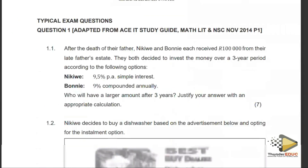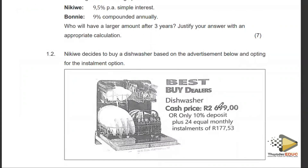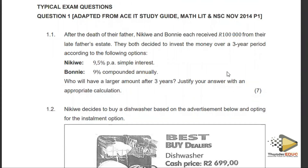Let's look at an example from the November 2014 Paper 1 exam. After the death of their father, Nikkiwe and Boniwe each received 100,000 rand from their late father's estate. They both decided to invest the money over a period of three years. Nikkiwe took 9.5% simple interest and Boniwe took 9% compounded annually. The question asks who will have a larger amount after three years.